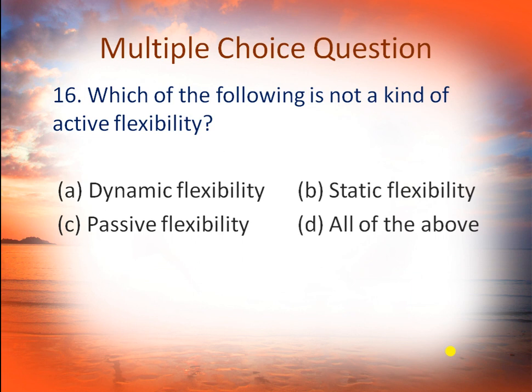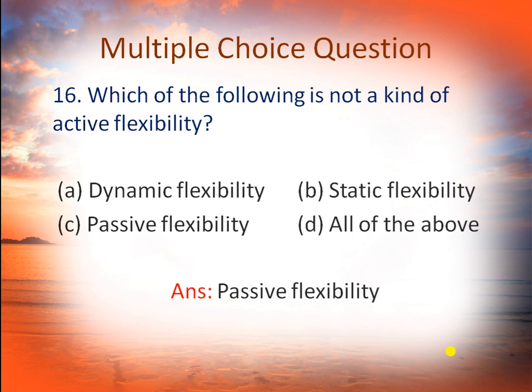Question number 16: which of the following is NOT a kind of active flexibility? Option A: dynamic flexibility, B: static flexibility, C: passive flexibility, or D: all of the above. There are two types of flexibility — active and passive — and active has two parts: static and dynamic. So the right answer is C, passive flexibility. Passive flexibility is not a kind of active flexibility.